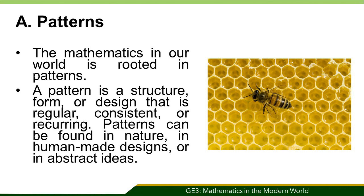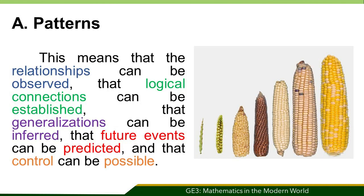Patterns can be found in nature, in human-made designs, or in abstract ideas. They occur in different contexts and various forms. Because patterns are repetitive and duplicative, their underlying structural regularities can be modeled mathematically. In general sense, any regularity that can be explained mathematically is a pattern. Thus, an investigation of nature's pattern is an investigation of nature's numbers.